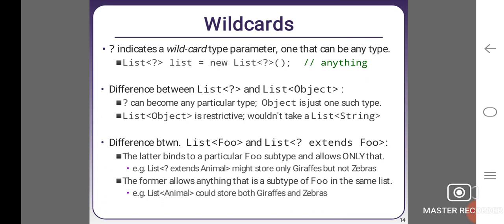Difference between List<Foo> and List<? extends Foo>: The latter binds to a particular Foo subtype and allows only that. Example: List<? extends Animal> might store only giraffes but not zebras. The former allows anything that is a subtype of Foo in the same list. Example: List<Animal> could store both giraffes and zebras.